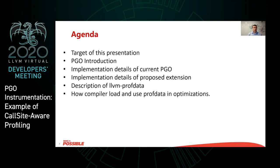Then we'll take a look at PGO, how it's implemented in LLVM, why it's implemented, what the benefits are, and we'll dive into implementation details — our data structures, optimization passes, and additional tools used to process data. In the second part, we'll cover how to extend existing profile guided optimization by adding new data, using call site aware profiling as an example. We'll describe how to extend passes and instrumentation, and how to load new profiling data and pass it to optimizations.